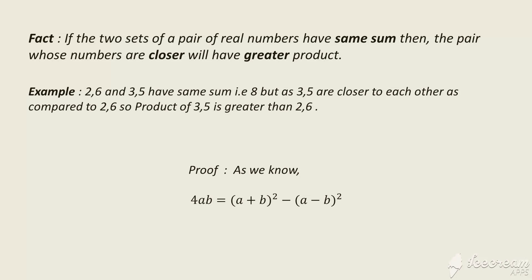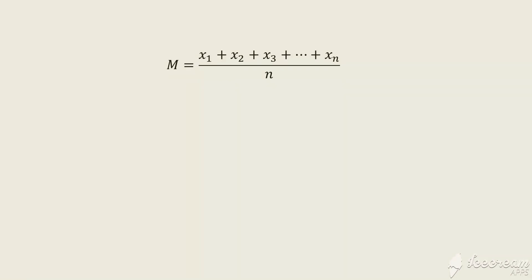So this fact will be used in our proof. Now let's start the proof. Consider M = (x₁ + x₂ + x₃ + … + xₙ) / n, which is the arithmetic mean, and P = x₁ · x₂ · x₃ · … · xₙ, the product of all the numbers.